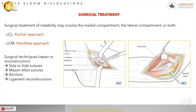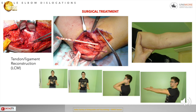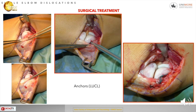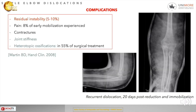In case of surgery, we can use two approaches: the Kocher approach for lateral access in cases of lateral ulnar collateral ligament lesion, and the Hotchkiss approach for medial collateral ligament lesion. Here you can see a complete lesion of the medial collateral ligament reconstructed with a graft. On the lateral side, you can see repair of the lateral ulnar collateral ligament with transosseous sutures. Alternatively, suture anchors can be used with similar results.